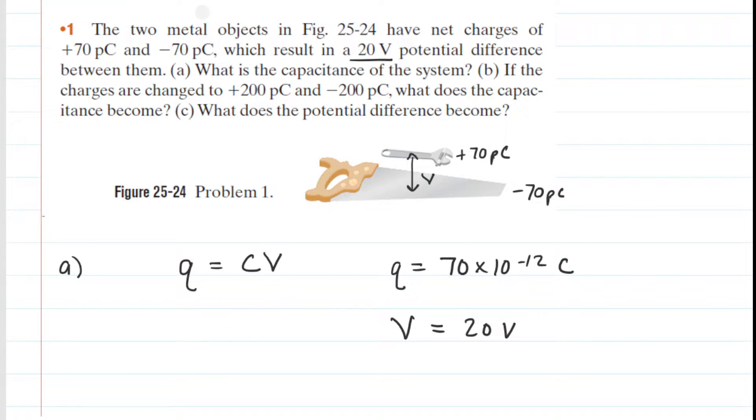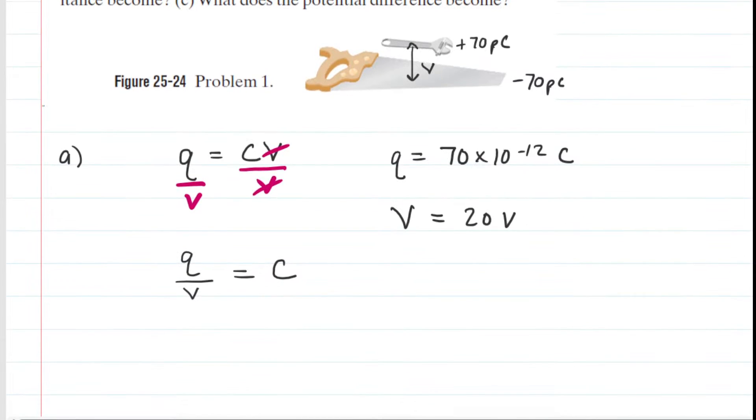So to solve for capacitance we would go into this equation and we would divide both sides by the potential difference to cancel it out on the right-hand side. And then we can scoot down the page here and plug in the given charge and potential difference.